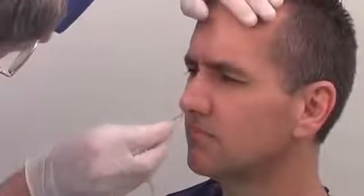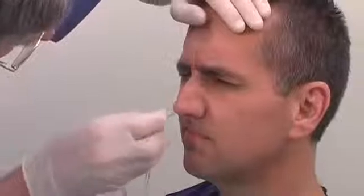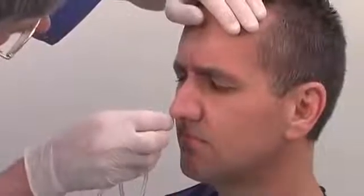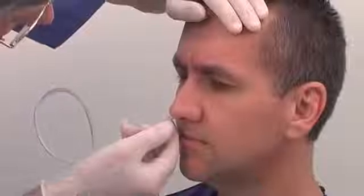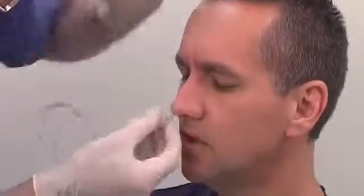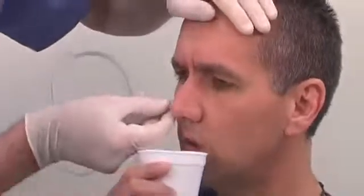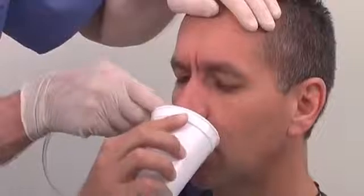Gently insert the tube until you reach the nasopharynx. You will feel a slight resistance at this point. Twist the tube 180 degrees. If not contraindicated, ask the patient to sip some water and to swallow slowly.